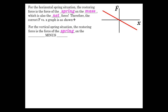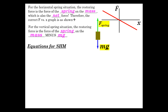For the vertical spring, the restoring force is the force of the spring on the mass, but we subtract off the weight. If we do a free body force diagram, we see gravity and spring force acting. The spring force has to overcome the weight before there's any net force upward, so the restoring force is the spring force minus the weight.